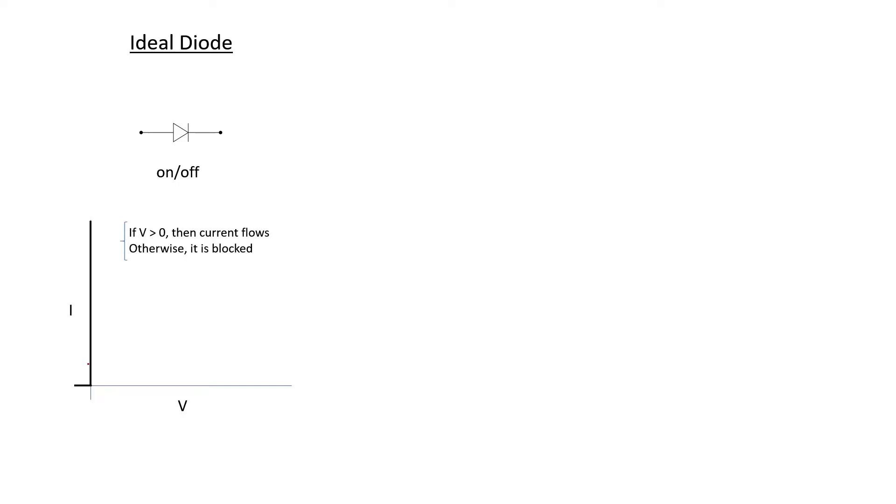The problem here is with our model. We need a better model. The transformer is obviously not ideal. The diodes are also not ideal. Let's start with the diodes and compare an ideal diode to a non-ideal diode. An ideal diode switches either on or off. If the voltage is positive, then current passes through the diode. Otherwise, it's blocked.